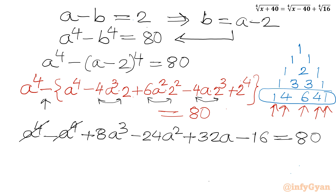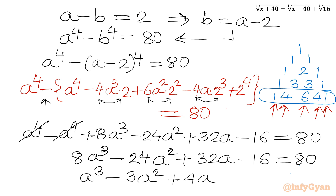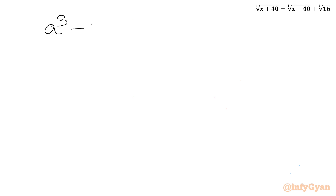The remaining equation is 8a³ minus 24a² plus 32a minus 16 equals 80. This is divisible by 8, so dividing: a³ minus 3a² plus 4a minus 12 equals 10. Taking all terms to the left-hand side gives: a³ minus 3a² plus 4a minus 12 equals 0.